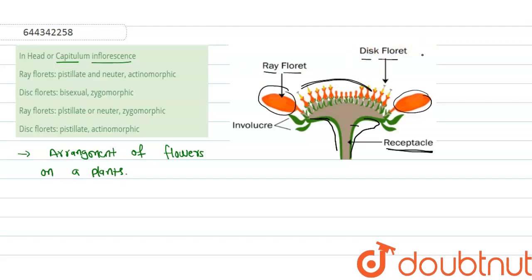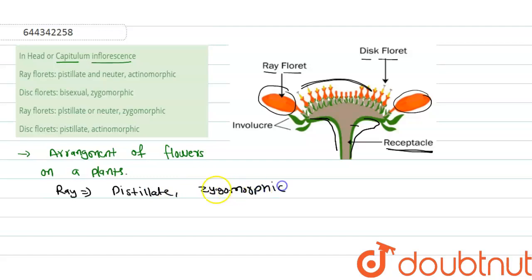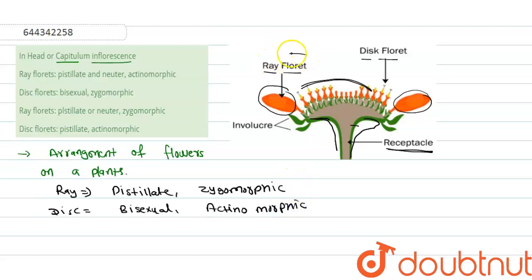The ray florets are pistillate and zygomorphic. The disc florets are bisexual and actinomorphic. So ray florets are pistillate and zygomorphic, while disc florets are bisexual — meaning both male and female organs are present on the same floret — and they are actinomorphic.